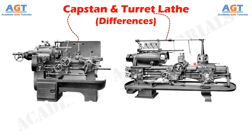These lathes are used to produce a large number of identical parts in minimum time and are used for mass production with maximum accuracy and precision. These are semi-automatic lathes, which means that all the machining processes such as boring, drilling, thread cutting, facing, turning, etc. are done automatically without changing tools, while other functions like the setting of tools, clamping of a workpiece, and cooling of the process are done manually. These machines can machine from small to large workpieces and are costlier than engine lathes because of their complex construction.